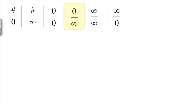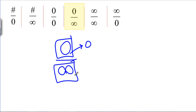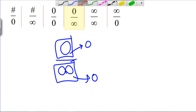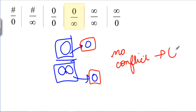For 0 divided by infinity, the top of the fraction is trying to make the answer zero — zero times anything is zero. And dividing by infinity also makes the whole answer go towards zero. In this case both want the answer to be zero, so there's no conflict. This is not an indeterminate form; it really does just go to zero.